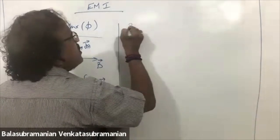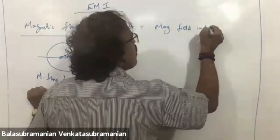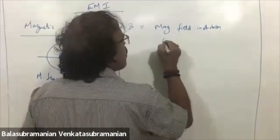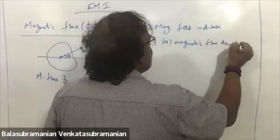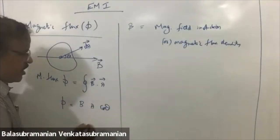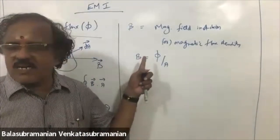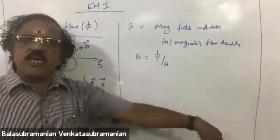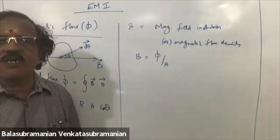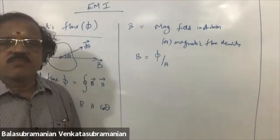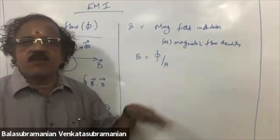So B is called Magnetic Field Induction, or Magnetic Flux Density. When theta is equal to zero, phi is equal to BA, then B can be written as phi by A. So the number of magnetic lines passing per unit area normally — how many magnetic lines pass per unit area normally — we call it Magnetic Induction. This is a vector, because we are taking the normal of the area.